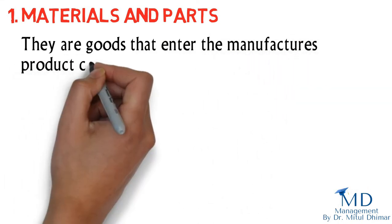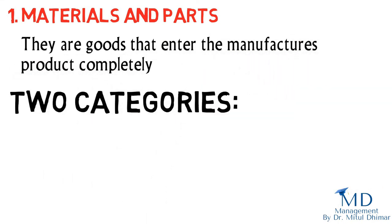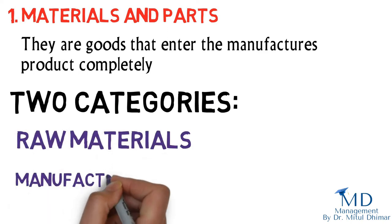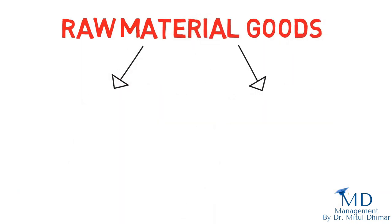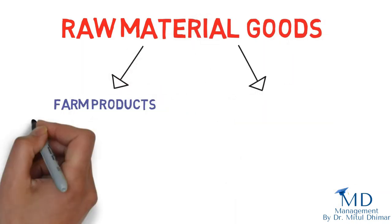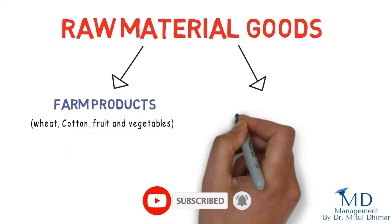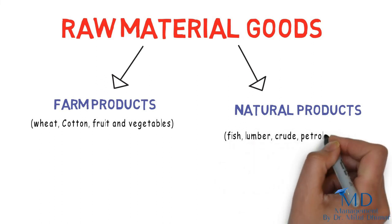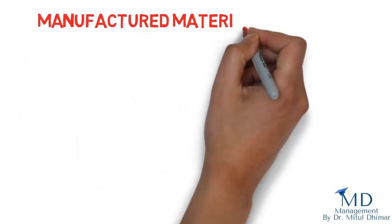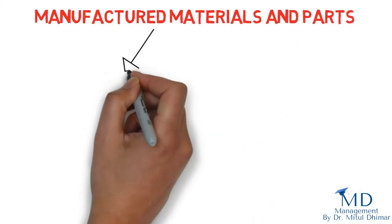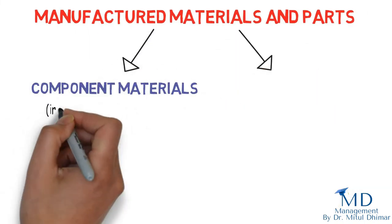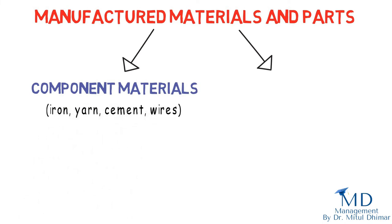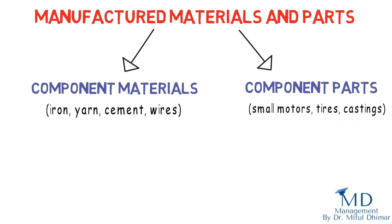Materials and parts fall into two categories: raw materials and manufactured materials and parts. Raw material goods fall into two major groups: farm products such as wheat, cotton, fruit, and vegetables, and natural products such as fish, lumber, crude petroleum, and iron. Manufactured materials and parts fall into component materials — iron, yarn, cement, wires — and component parts such as small motors, tires, and castings.